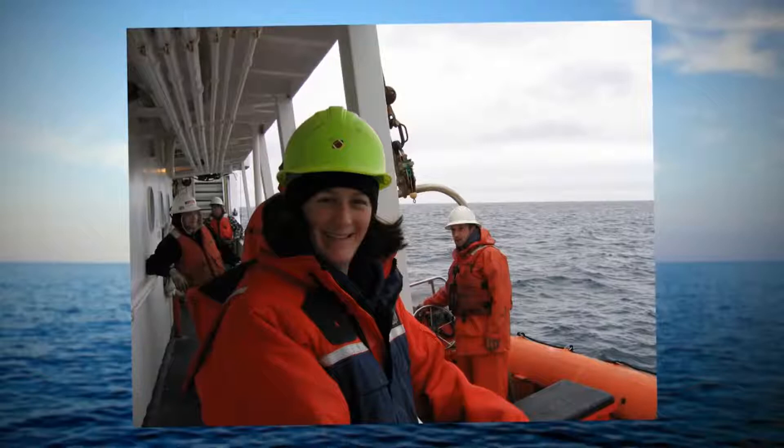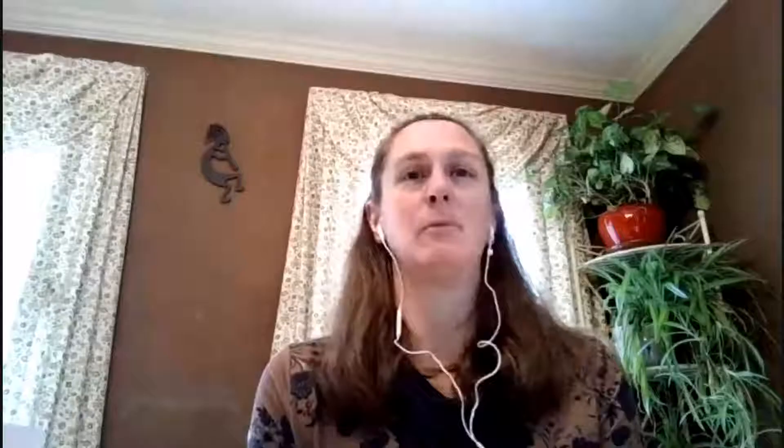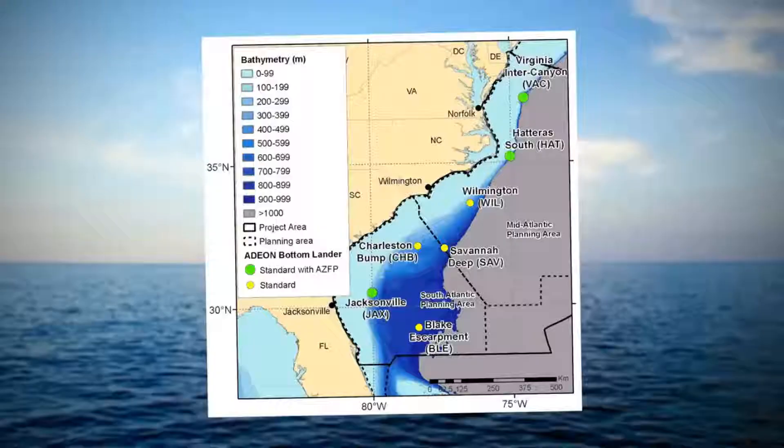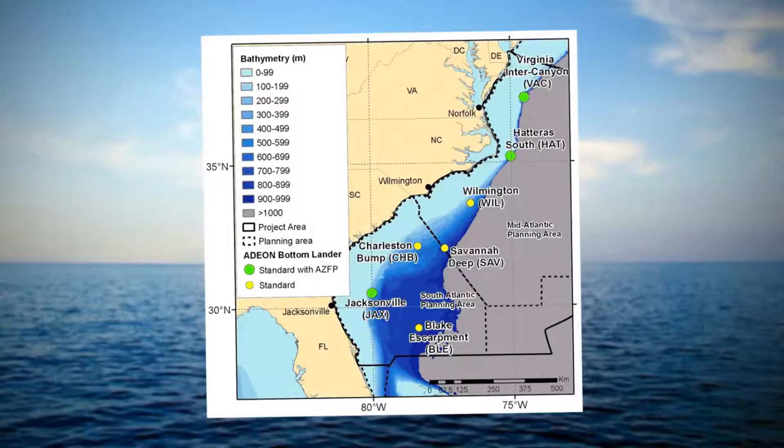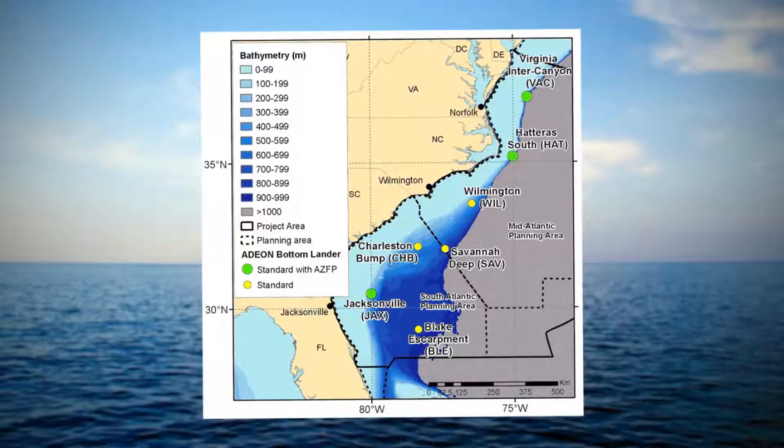It's called the Atlantic Deepwater Ecosystem Observatory Network. We have seven different sites. What's really great about this project is that all of the data we record and all of the products we make are available to the public, other scientists, and anybody interested in the data streams. Not only do we use it for our project and study, but people around the world are downloading that data and using it for their own studies.